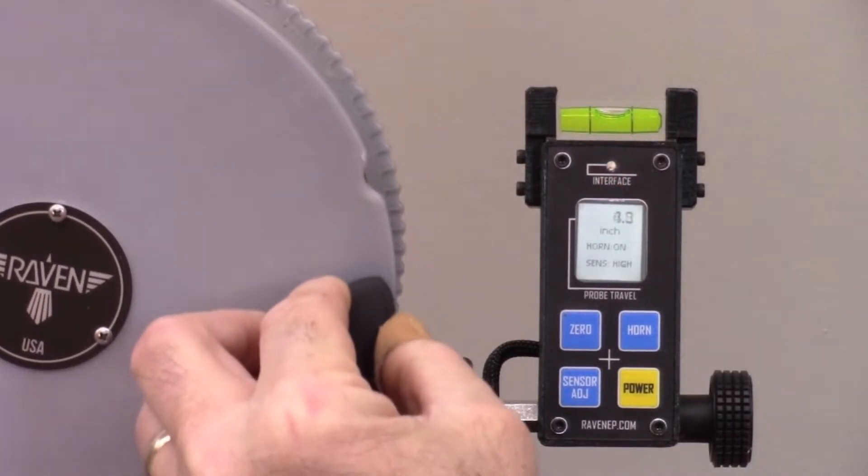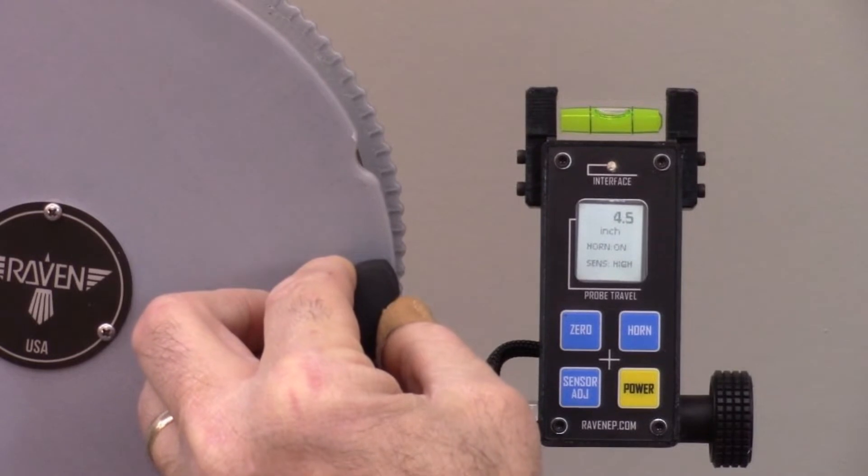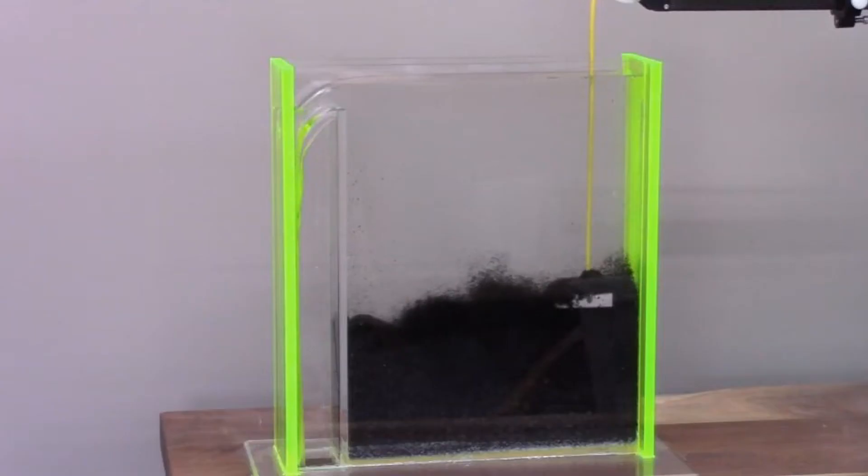The probe is lifted out of the expanded media until the horn stops and the red LED goes out. The spring break is set and the probe is locked in at the top of the expanded media.